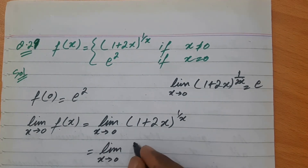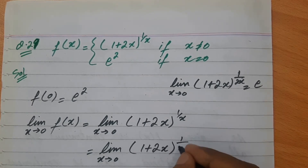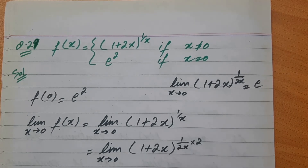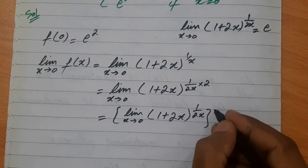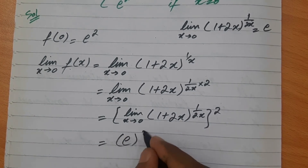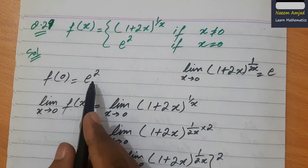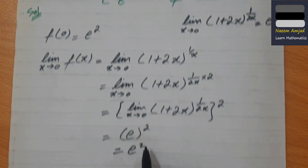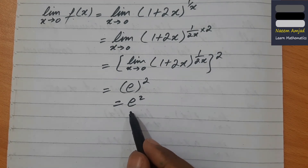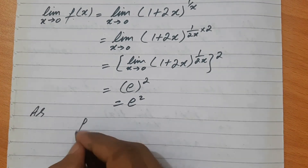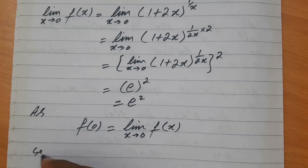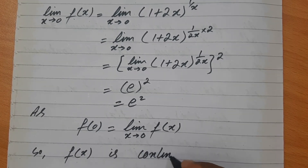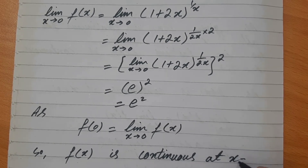इसे इस तरह लिख सकते हैं: limit x→0 [(1+2x)^(1/(2x))]²। Bracket के बाहर 2 आएगा। यह पूरी term → e² हो जाती है। Function का defined value भी e² है और limit भी e² है — दोनों equal हैं। So f(x) is continuous at x = 0।